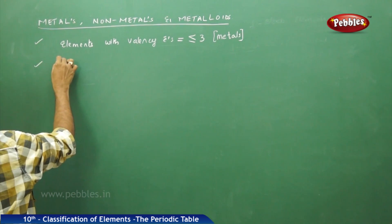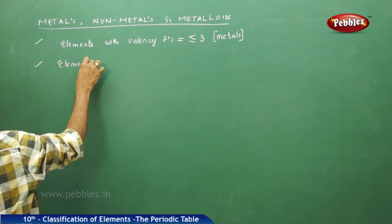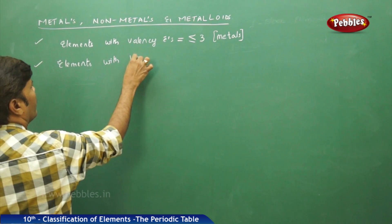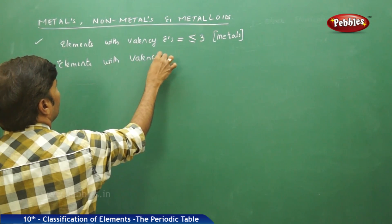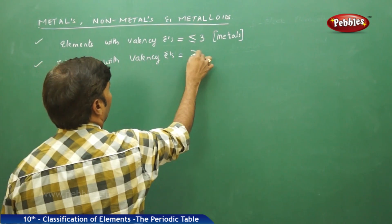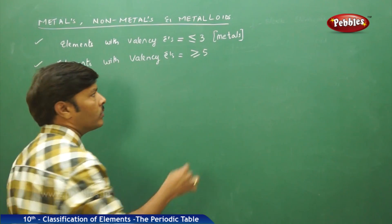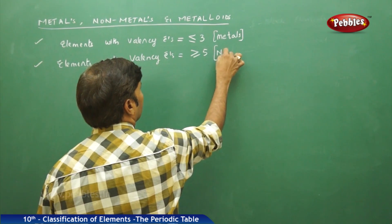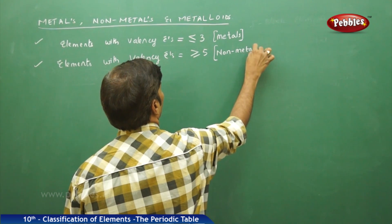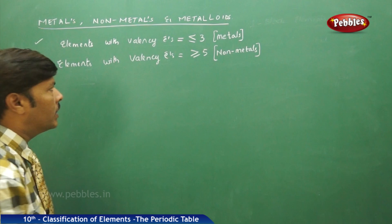Then elements with valence electrons greater than or equal to 5 are said to be nonmetals.